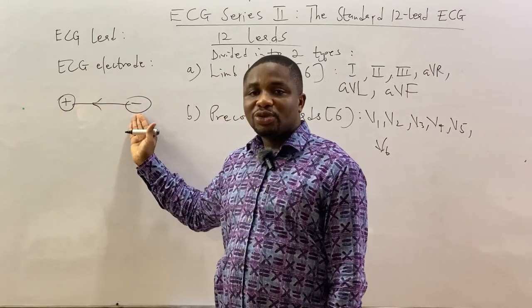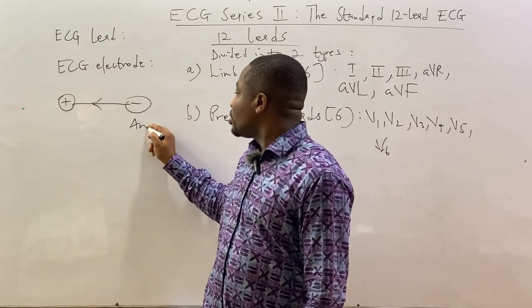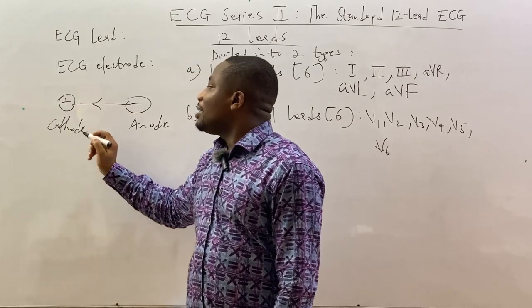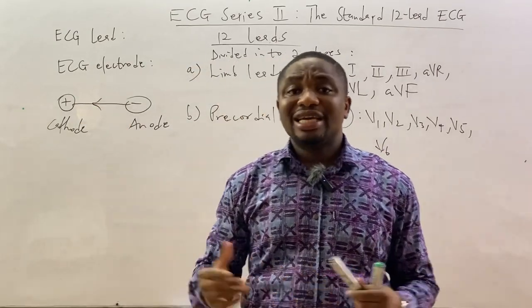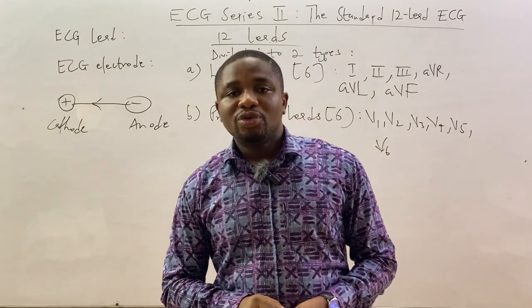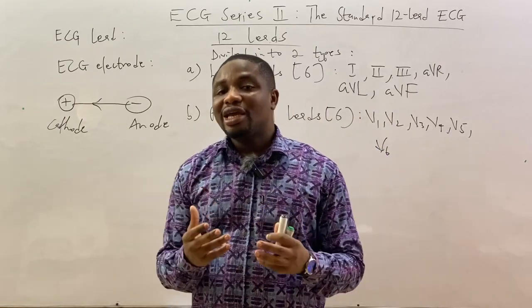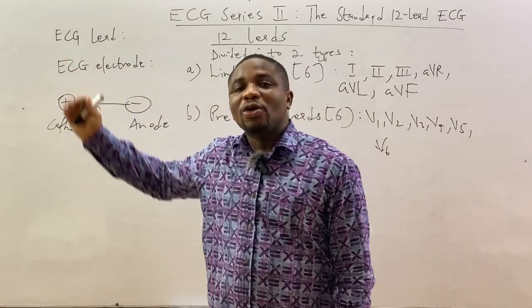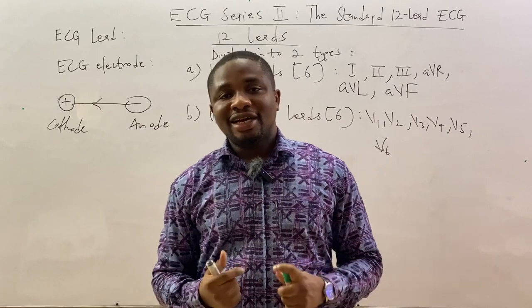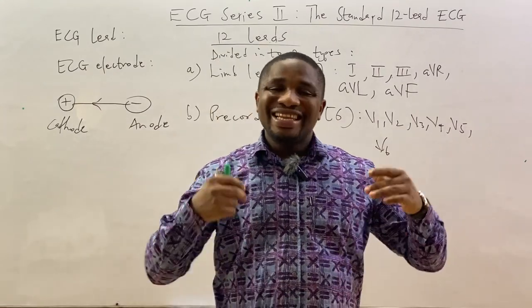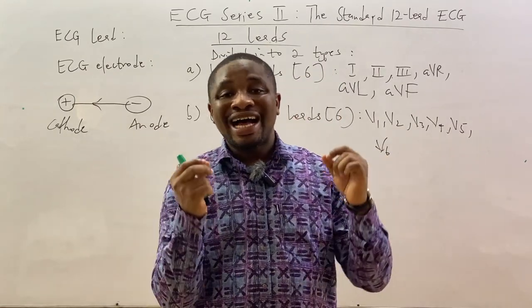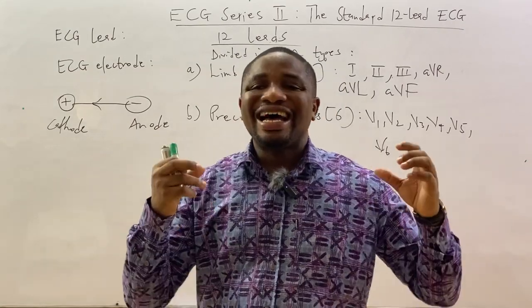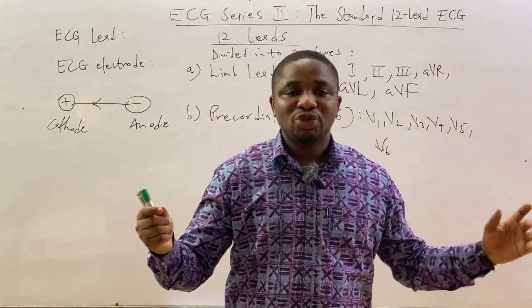The negative electrode is known as the anode, and the positive electrode is known as the cathode. That imaginary line drawn between the anode and the cathode gives you an ECG lead. An ECG lead can also be defined as the graphical representation of the electrical activity of the heart, calculated by analyzing data from several electrodes.